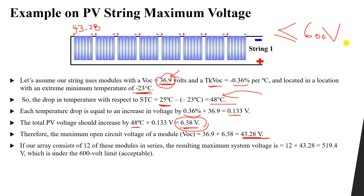If we connect 12 modules in series, the total maximum open-circuit voltage is 12 × 43.28V = 519.4V. Since 519.4V is less than 600V, connecting 12 modules in series is acceptable — it produces less than 600V even at the extreme minimum temperature.